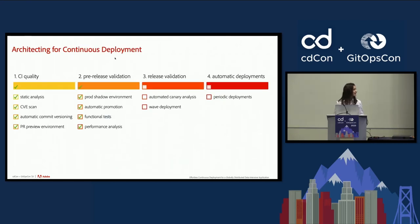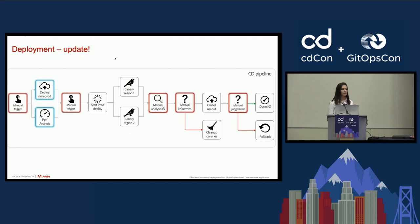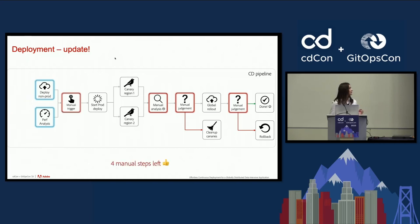Let's come back to our initial to-do list and check the items for CI quality and pre-release validation. We automated performance analysis and were able to automatically promote changes to non-production environments thanks to functional validation. This allowed us to eliminate the first manual step, which leaves us with four.